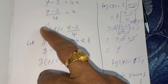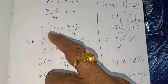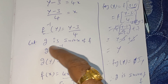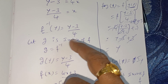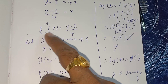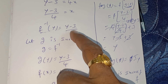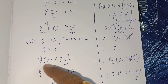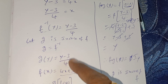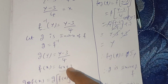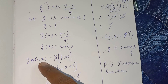Let me repeat. Let g be the inverse of f, meaning g = f⁻¹. We already wrote f⁻¹(y) = (y - 3)/4, so g(y) = (y - 3)/4. Given f(x) = 4x + 3. Now consider g∘f(x).